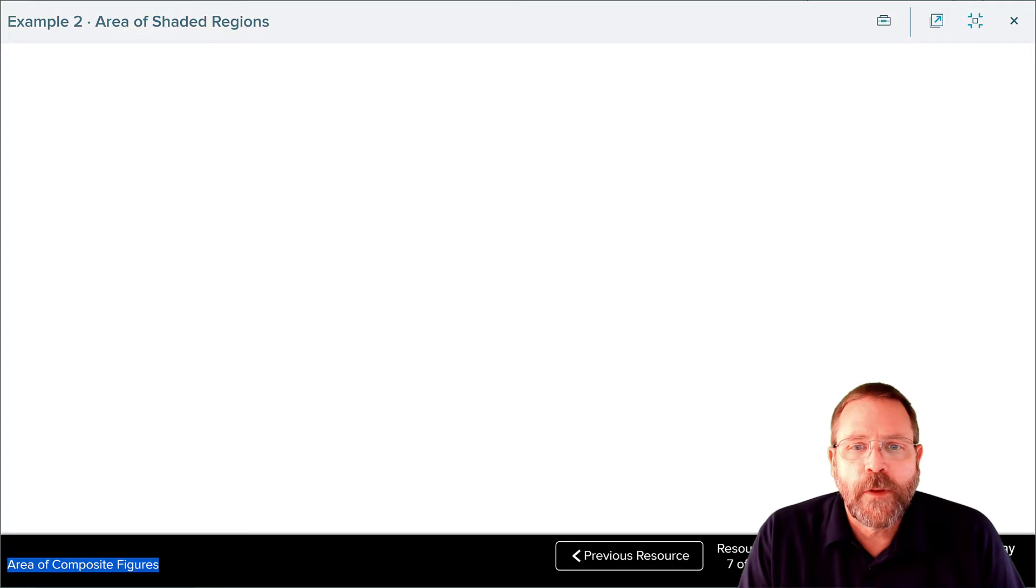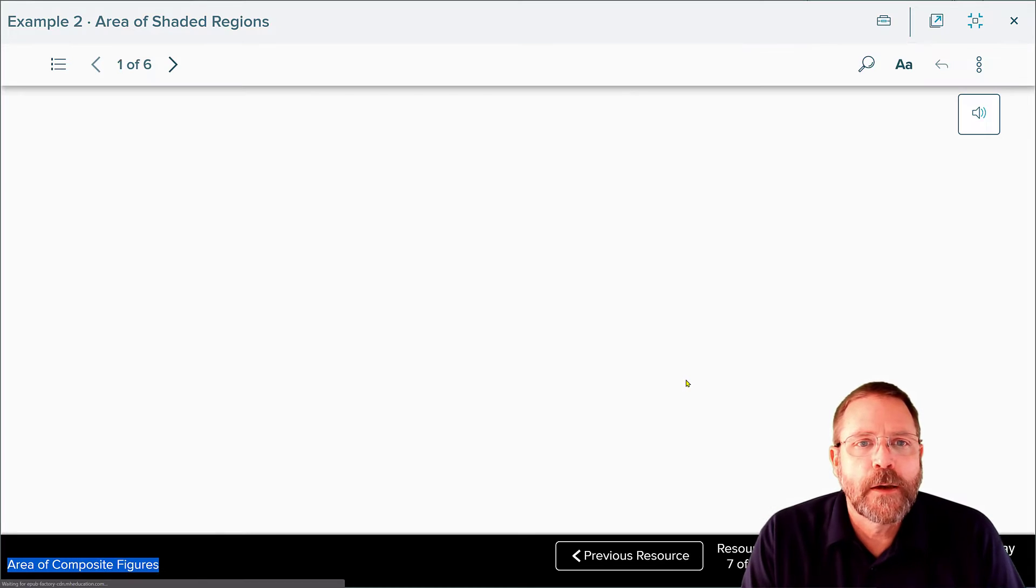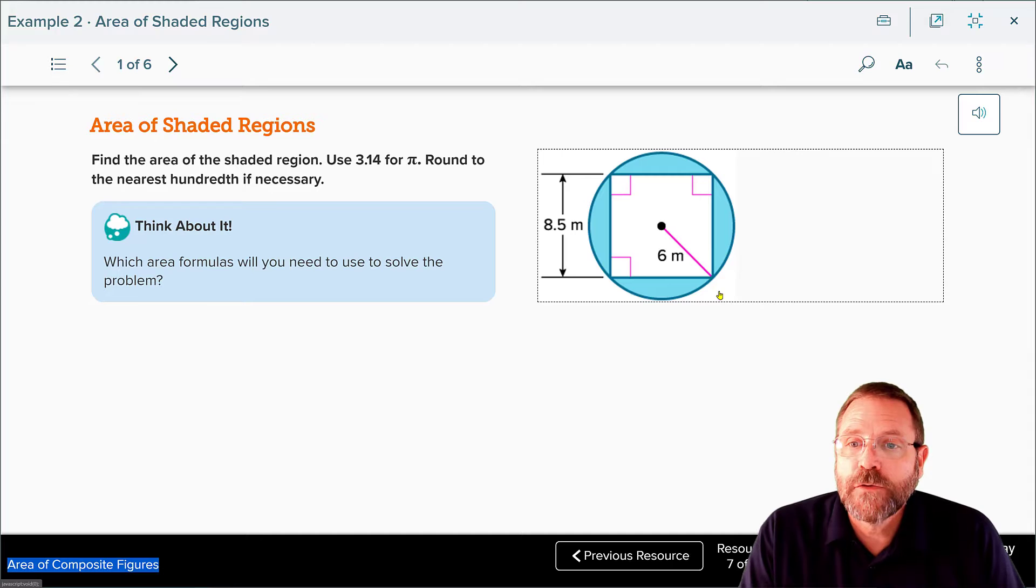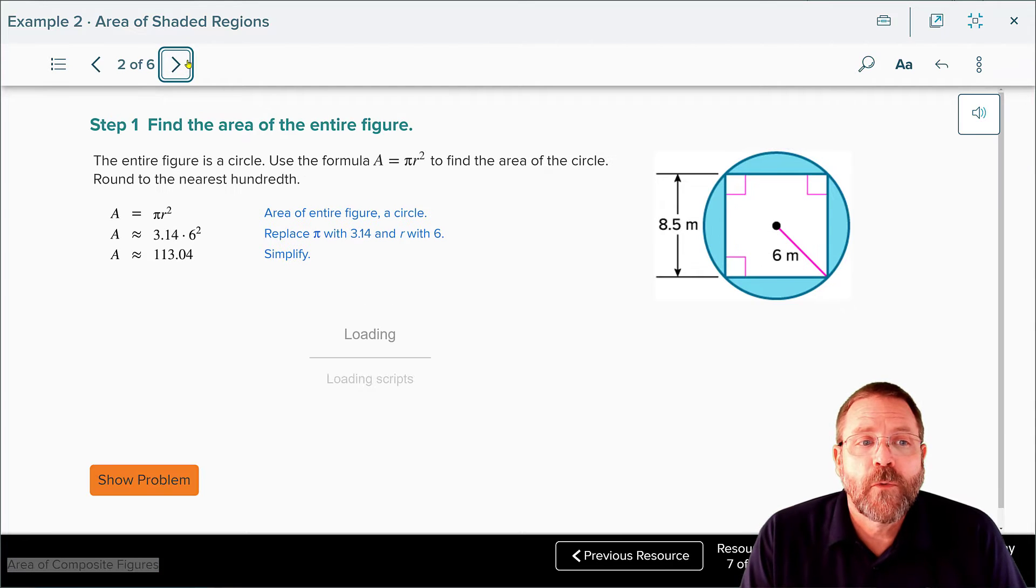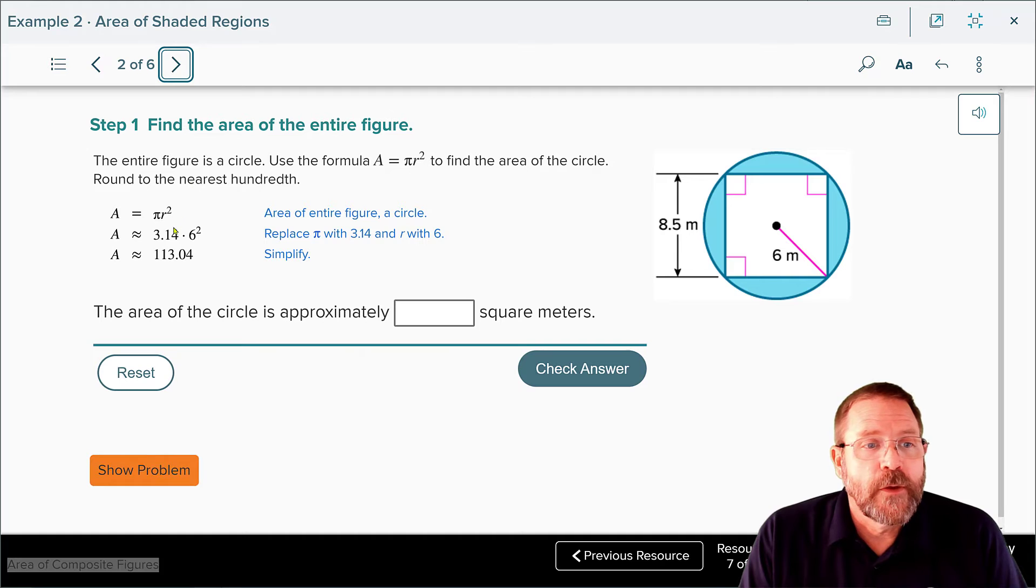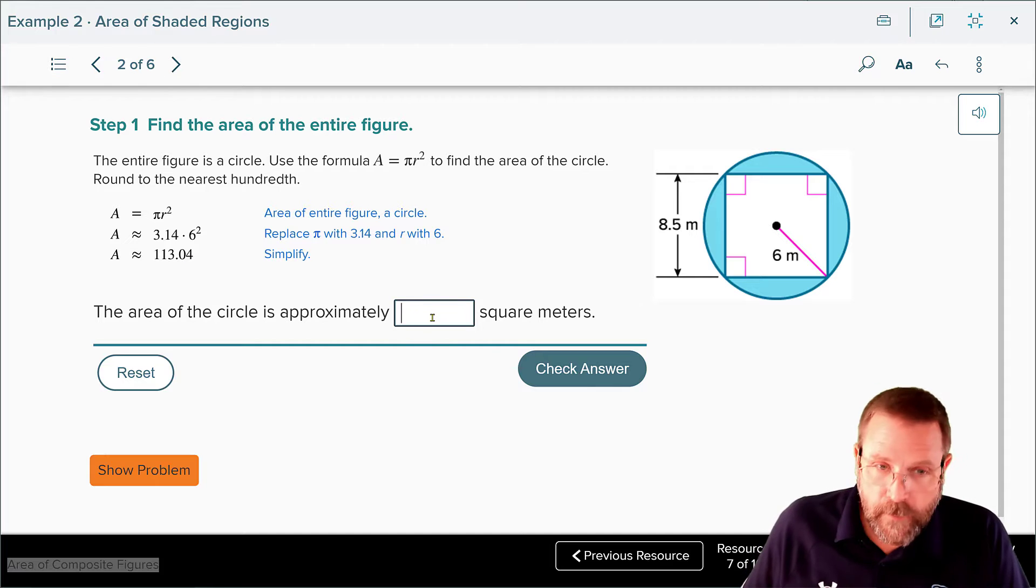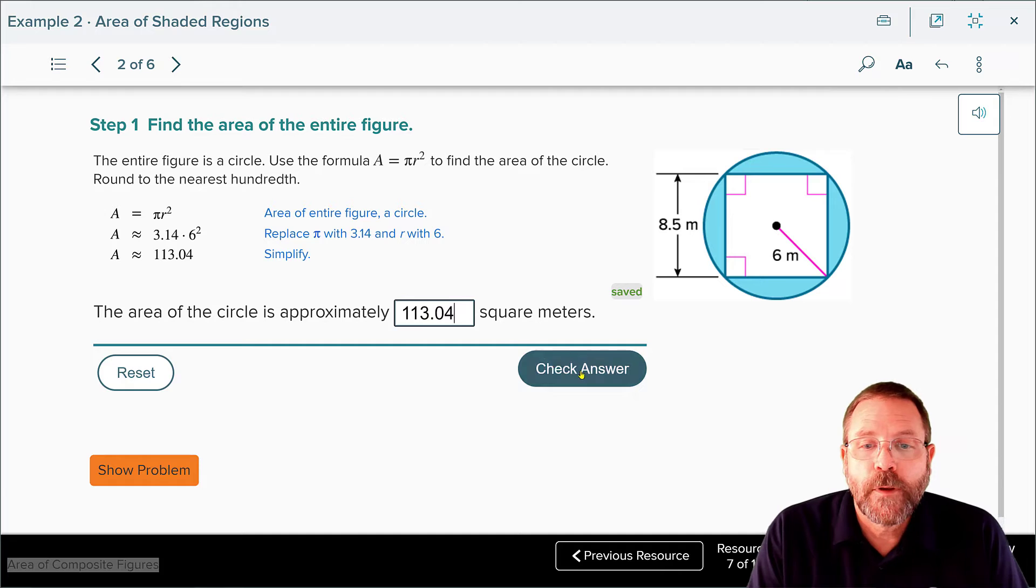For example 2, we're going to be looking at the area of a shaded region. We have a shaded circle with an unshaded square inside of it. So to work this, the first thing we need to do is find the area of the circle. They did the formula, pi times radius squared, plugged in what they knew and got the area of the circle which is 113.04 square meters. So you would type that in, 113.04. That part checks.